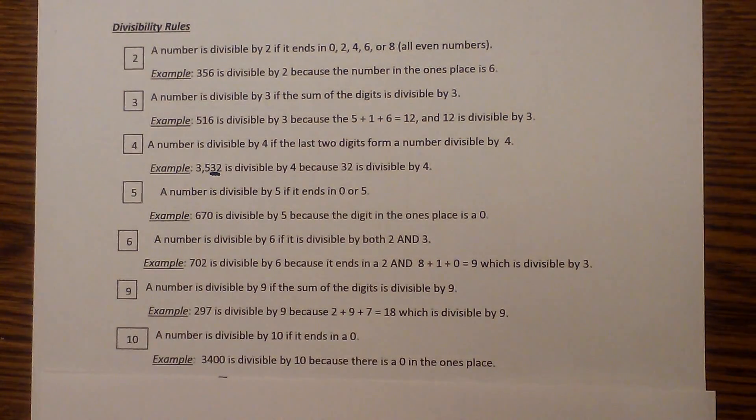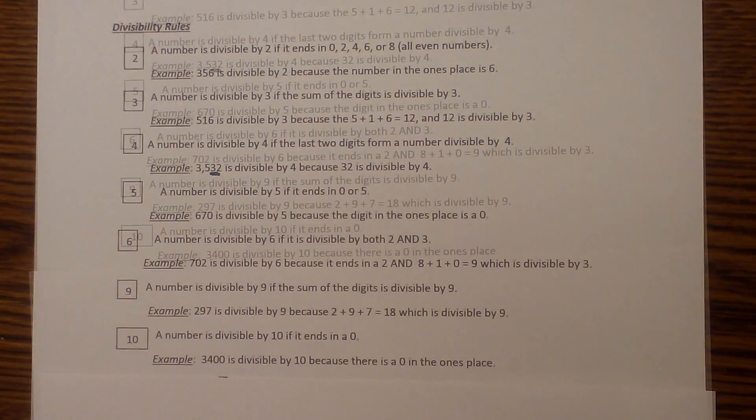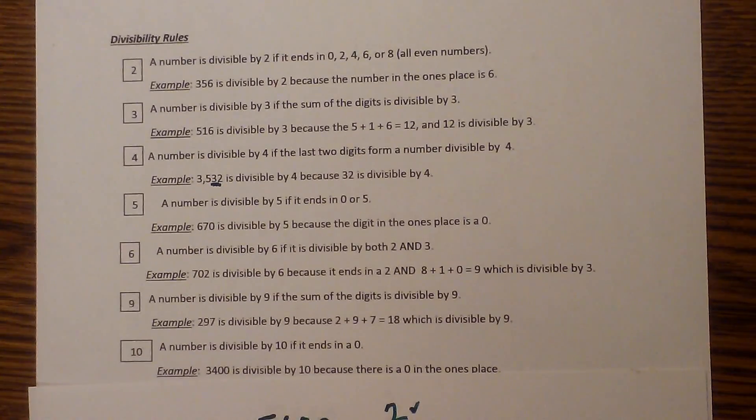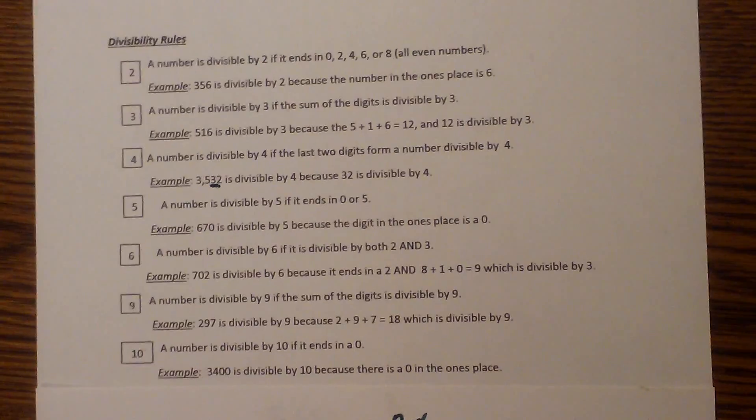And the last one, 10, is very easy - if it ends in 0. Divisibility rules in the long run can save you a lot of time.